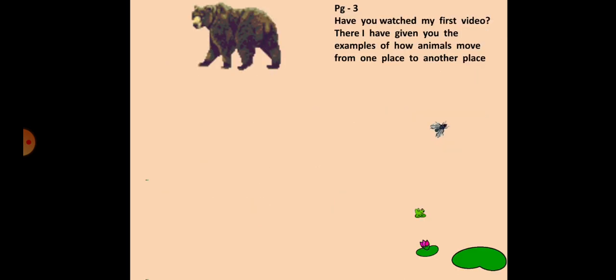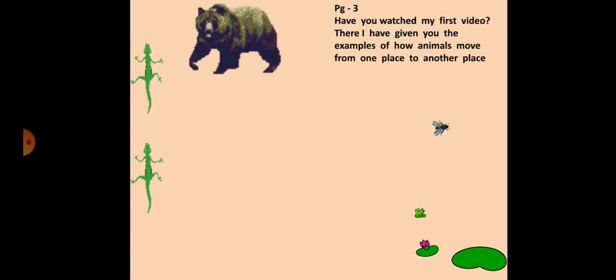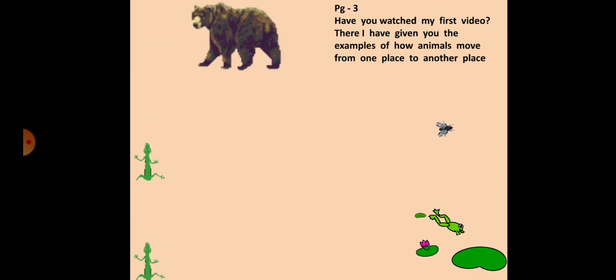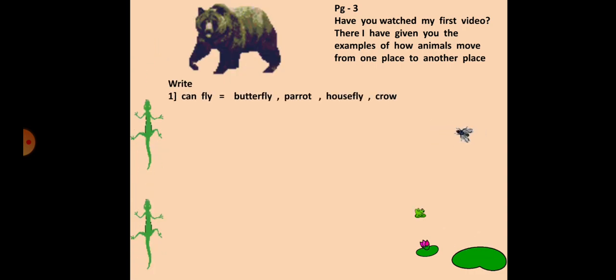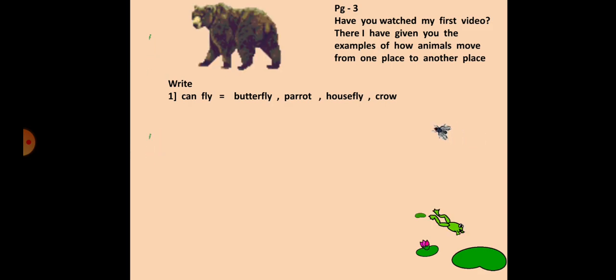Let us go to the next question. Here in page number three. In my first video there I have given you the examples of how animals move from one place to another. So here you have to write the answers. First one is given for you. Can fly: butterfly, parrot, housefly, crow.